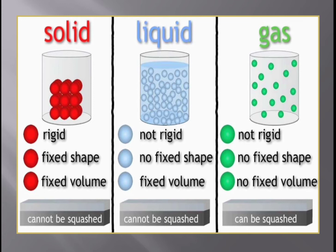These gases can be compressed. This property of gases helps us to fill cylinders. A large volume of gas can be compressed and put into cylinders. That's why it is easier to fill cylinders with gases.